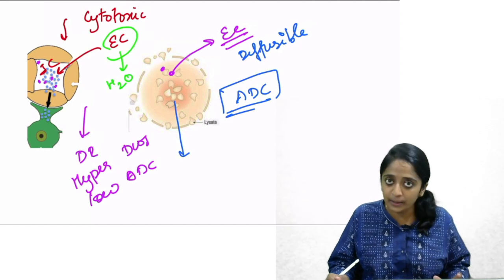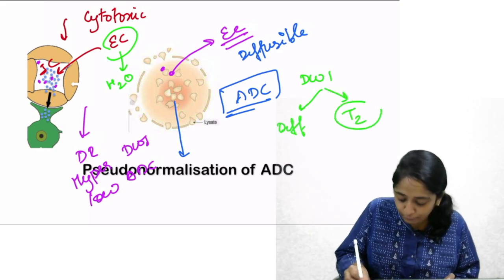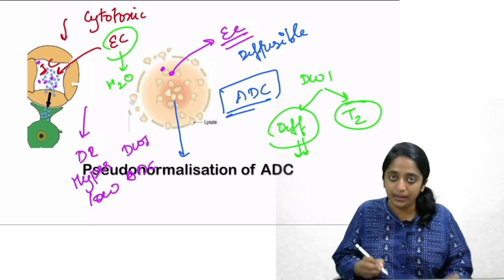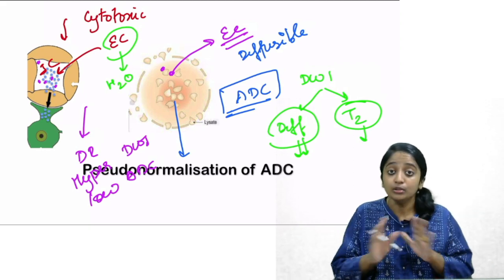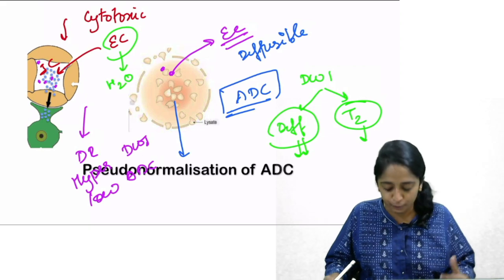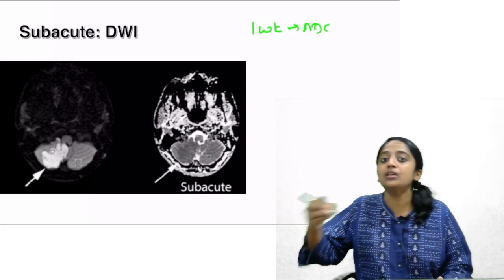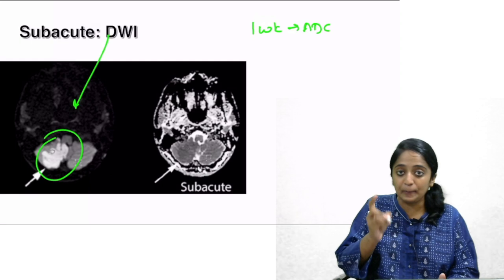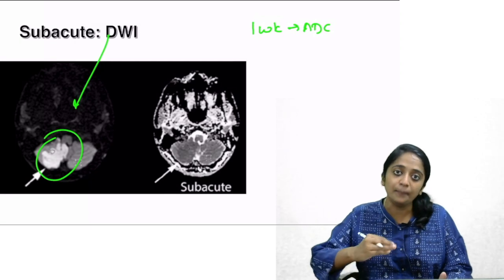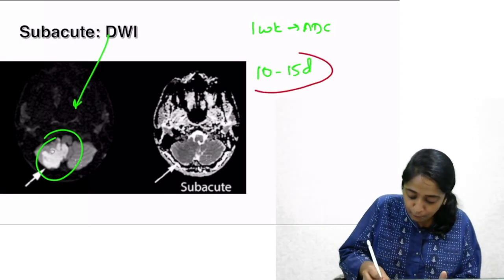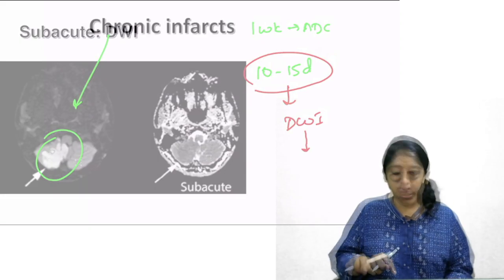The diffusion-weighted image, however, has both a diffusion component and a T2 effect. Facilitated diffusion is occurring, but the T2 shine-through effect (water having long T2 relaxation time) keeps DWI appearing bright. By the end of one week, ADC signal almost returns to normal — that is pseudo-normalization. It takes about 10 to 15 days for the DWI signal itself to reverse back to normal. Now let's move on to chronic infarct.